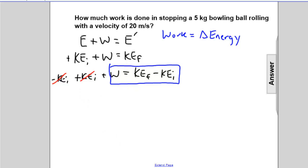So we can rewrite this. The work is equivalent to the kinetic energy final. That is one-half m VF squared minus the kinetic energy initial, one-half m VI squared.